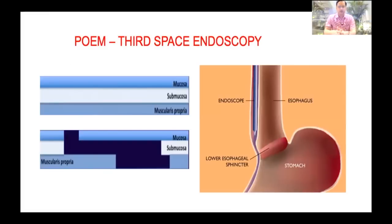POEM is a prototype of third-space endoscopy. The third space is the space within the wall of the esophagus — the submucosa. Submucosa is an expandable space which can be expanded by injecting fluid, and after expansion this space can accommodate our scope and we can perform various procedures here.